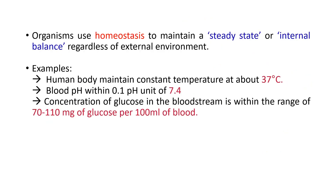Organisms use homeostasis to maintain a steady state or internal balance regardless of the external environment — whatever happens externally does not influence their internal environment. For example, the human body maintains a constant temperature of 37°C although the external temperature changes. Blood pH is maintained within 0.1 pH unit of 7.4, and the concentration of glucose in the bloodstream is kept within the range of 70 to 100 mg of glucose per 100 ml of blood.